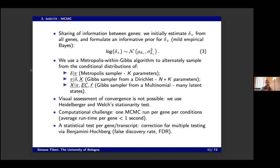Most of these steps follow a Gibbs sampler, meaning you directly target your distribution of interest, which is quite efficient in terms of convergence and mixing. Only a handful of parameters — the hyperparameters, specifically K parameters — fall under the Metropolis sampler, which is a bit slower. These K parameters are very few while the sample-specific parameters are dozens.